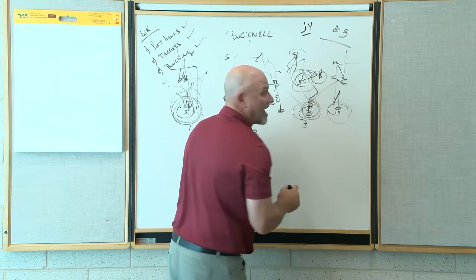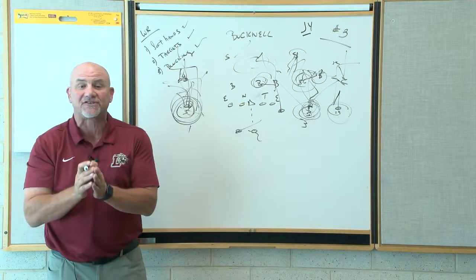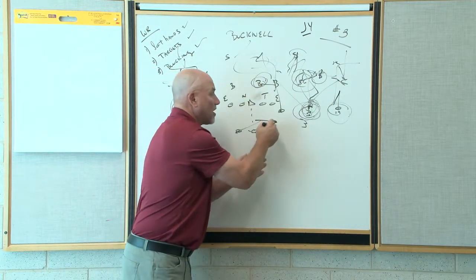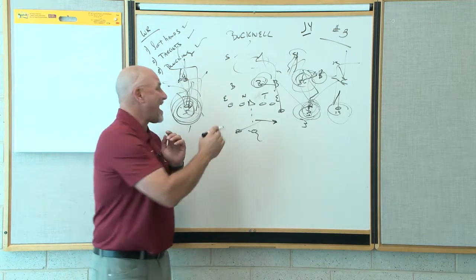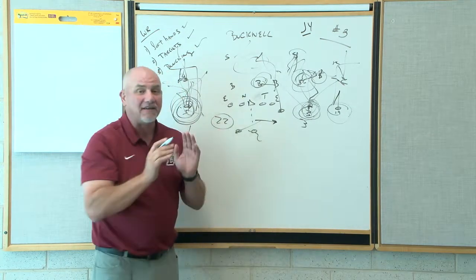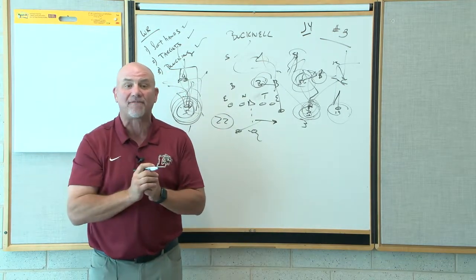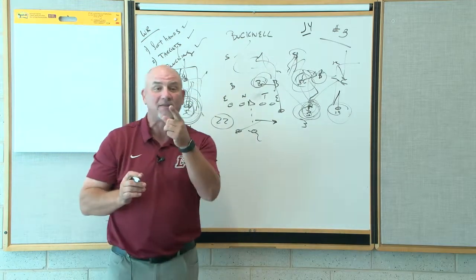If you're going to run quick game, you got to stalk block. You got to get in people's faces, give chances for that ball to come out quick. Cannot have 22 sacks in four games. Can't happen. Ball's got to come out faster. The one way to do that is to get the ball to JY.